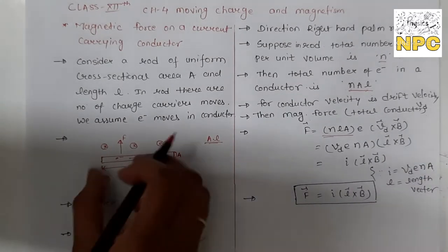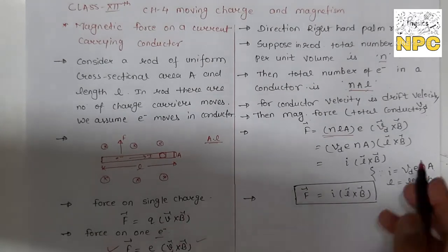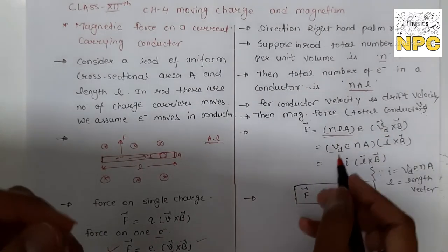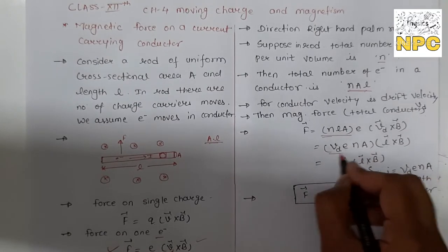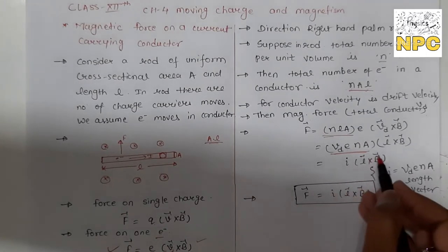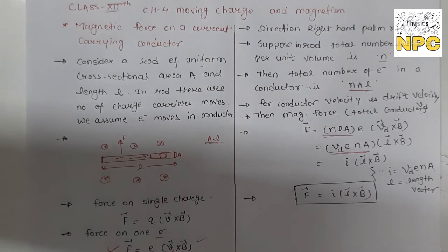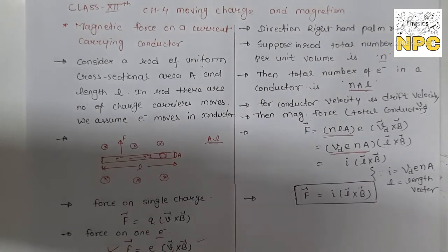Now let's see: separating the terms, V_D, e, and A — this is what we studied when studying current density. This whole value n·A·e·V_D is equal to current I. So we replace it with I.